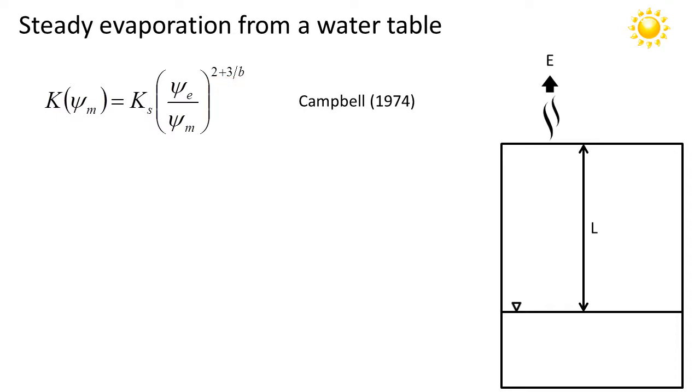So we'll just plug this Campbell model into our prior equation. This is the result. Now notice that I've written uppercase N for the exponent. Just remember that N is equal to 2 plus 3 over b where b is the Campbell exponent.